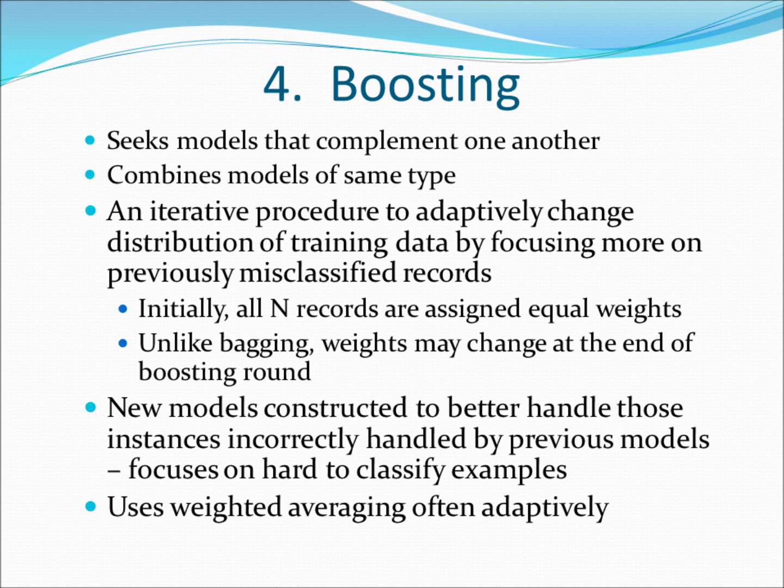One way is you purposefully, intentionally select this wrong classifier more frequently. If this is one wrong, you make it four times. They're going to have more weight in the training. Another way is in the algorithm, for example, for the artificial neural network, you have the weight. I can give more penalty for this error.